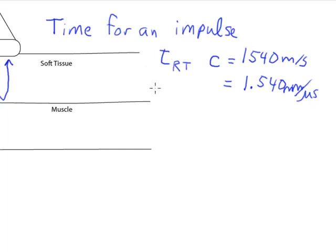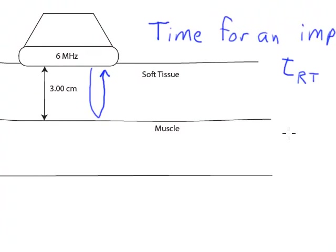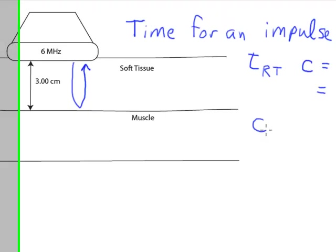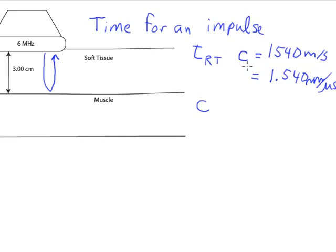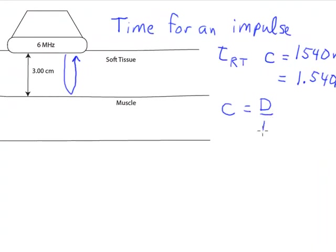That's the velocity of sound in soft tissue. Now if I think about speed, and I'm going to use letter C for speed because I'm using that letter up here, think about speed as being distance divided by time.